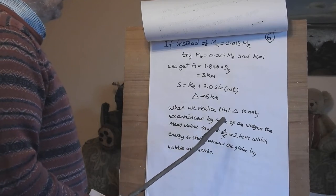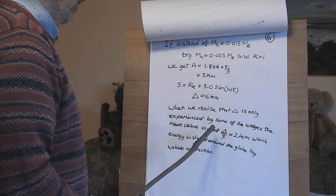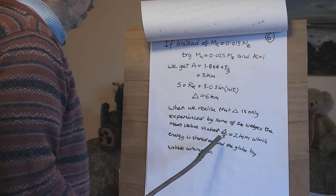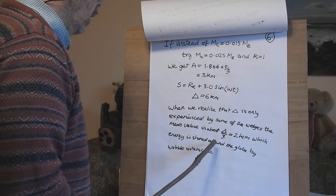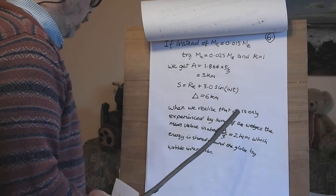When we realize that delta is only experienced by some of the wedges, the mean value is about delta over 3 equals 2 kilometers, which energy is shared around the globe by wobble interaction.